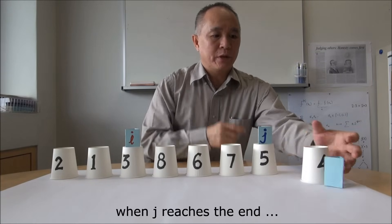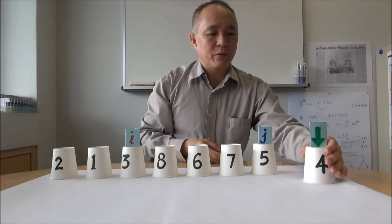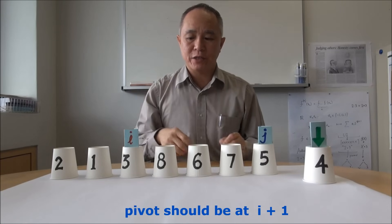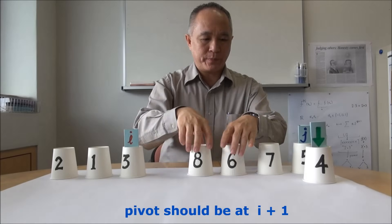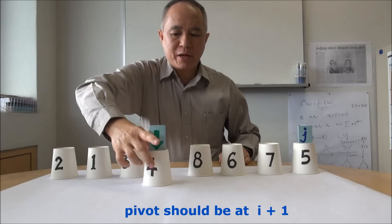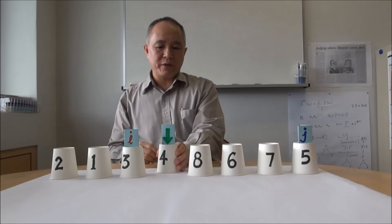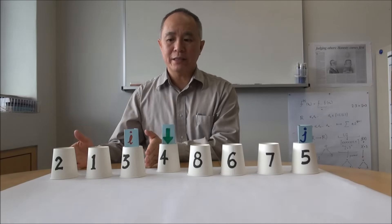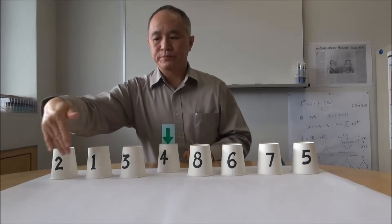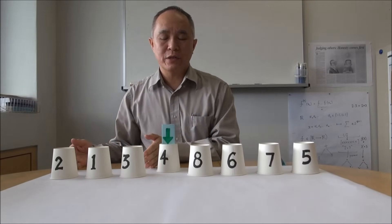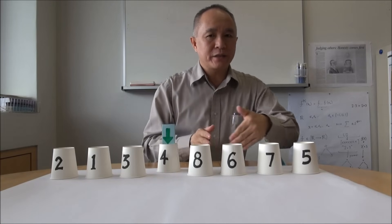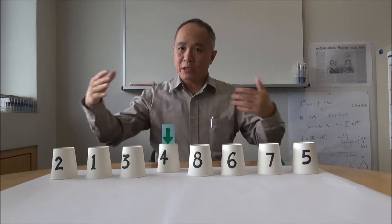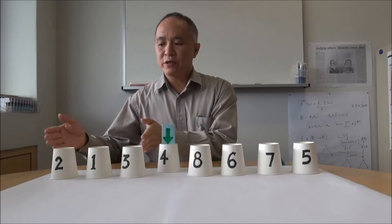Now where is the pivot's position? The pivot's position would actually be one more than where i is — that means at the i plus one position. So we shift everything and move the pivot to i plus one. The position of the pivot is now found; this is the position where it should be in the entire array. We then have a partition on the left where all values are smaller than the pivot, and a partition on the right where all values are larger than the pivot.